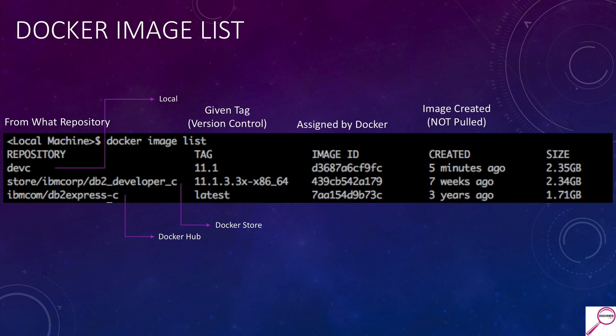The repository and tag together are often used to refer to a specific image, as is the image ID which is automatically assigned by Docker at download or creation. You can refer to an image as 'devc:11.1' for example, and it works the same way. What confused me for a long time was the 'Created' column — that's when the image was created, not when you pulled it down. So you could see Express C for 10.5 was created three years ago and barely updated, while Developer C was seven weeks ago and is up to fix pack three.